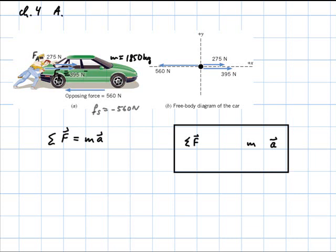So here I have gathered the information. I call the friction Fs equals negative 560 Newtons because it points to the left, and then I call the other two forces force by person A 275 Newtons, force by person B 395 Newtons, and then of course the mass of the car is given. So I'm gonna make myself some check marks here. There are three forces that are given, so force A, force B, and the frictional force. The mass is given and we're supposed to come up with the acceleration.